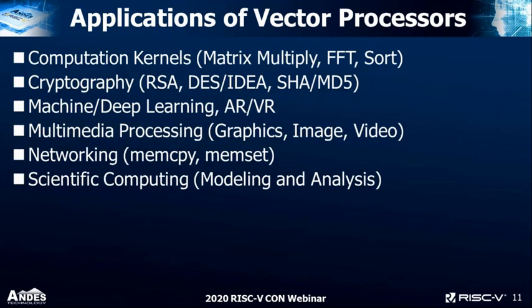What are the applications for vector processors? Mainly key computational kernels: matrix multiply, FFT, sorting — which are fundamental to cryptography (RSA, DES), machine learning, AR, VR, and multimedia processing including graphics, image, and video. Networking, because wide vector registers can accelerate memcopy and memset. And scientific computing — the way it started — modeling and analysis of large data sets.